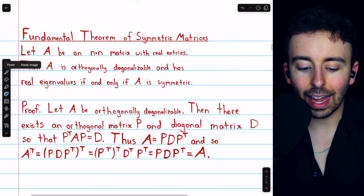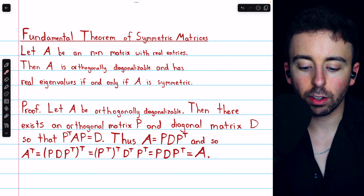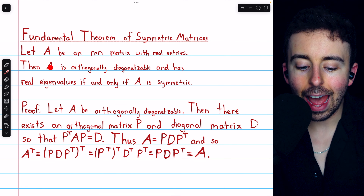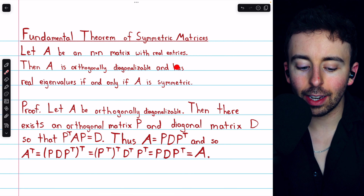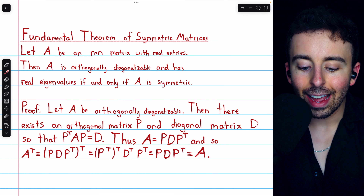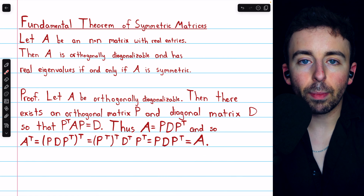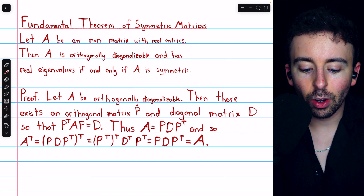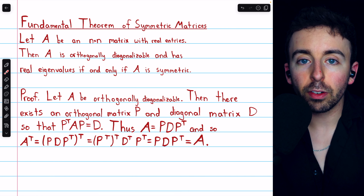That establishes the first result, and in tandem with several other things we've proven, we're now prepared to prove the fundamental theorem of symmetric matrices. This says: let A be an n by n matrix with real entries. Then A is orthogonally diagonalizable and has real eigenvalues if and only if A is symmetric. So which real matrices are orthogonally diagonalizable? It's the symmetric ones.